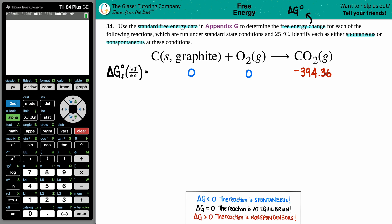My textbook is Appendix G—might be different for yours, but our numbers should be roughly the same. For carbon and oxygen, since they're elemental substances, they have zero kilojoules per mole, zero ΔG value. CO₂ has a -394.36 ΔG value.